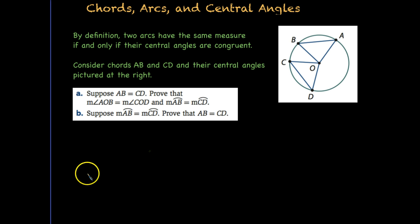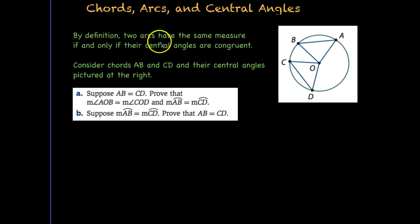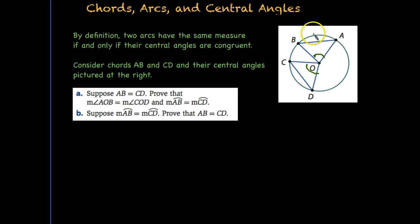Let's go ahead and look at a proof for our next theorem. By definition, two arcs have the same measure if and only if their central angles are congruent. So if this arc is congruent to this arc, those are both central angles, then arc AB has to be congruent to arc CD. We're going to look at some proofs to prove that's true, so we can use that to solve problems.